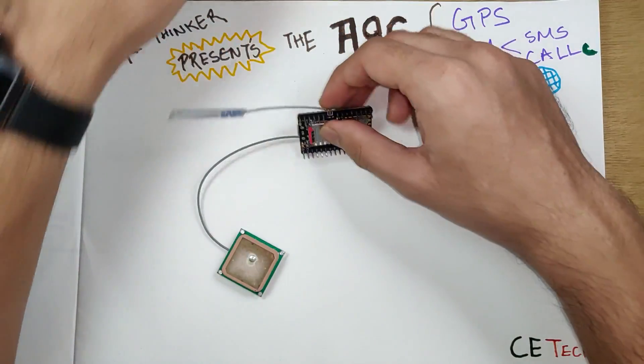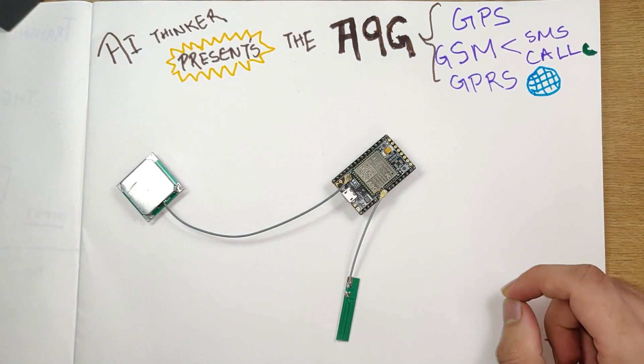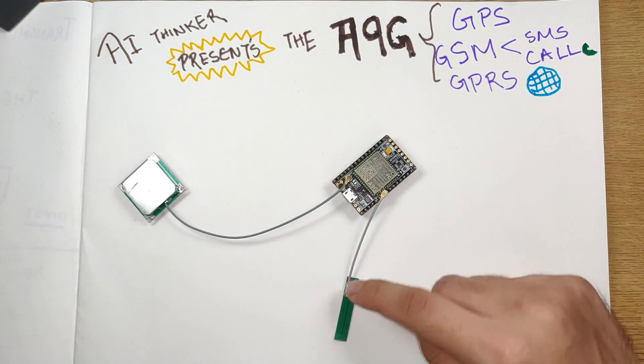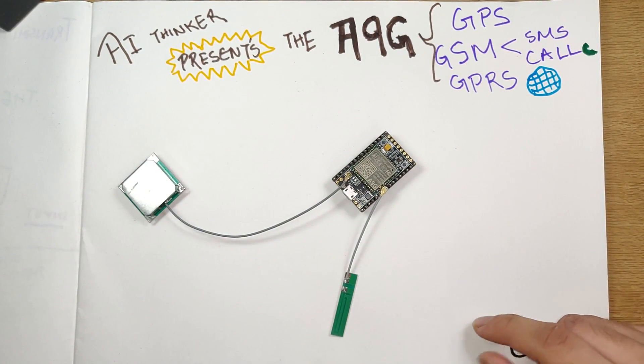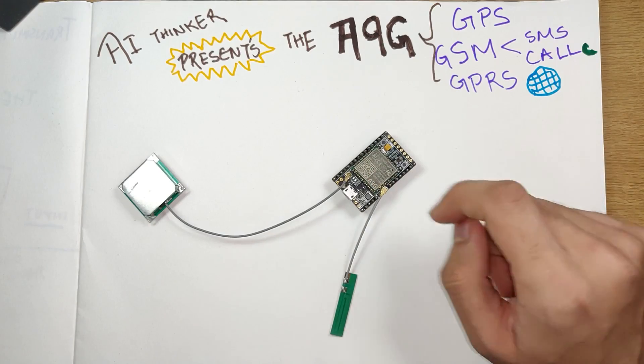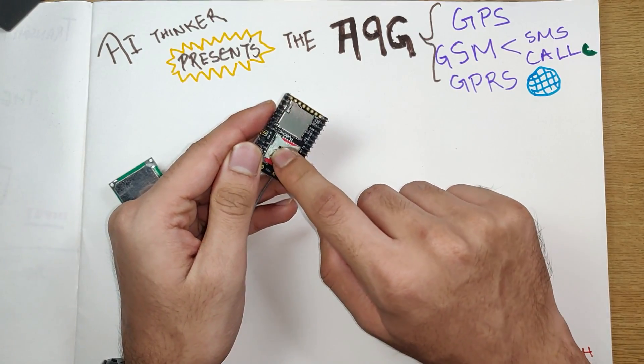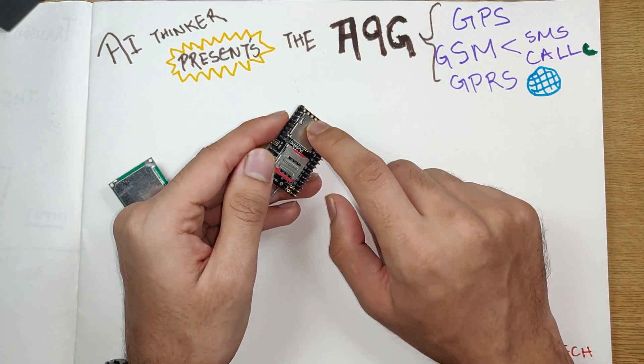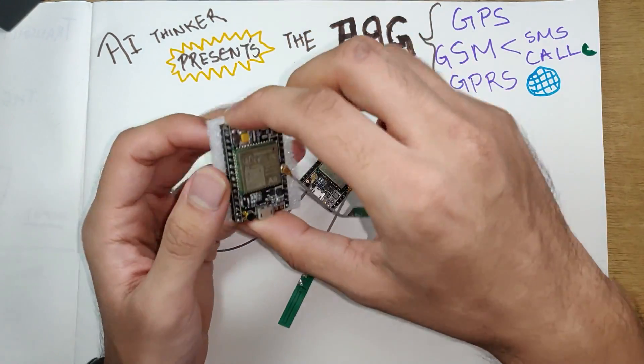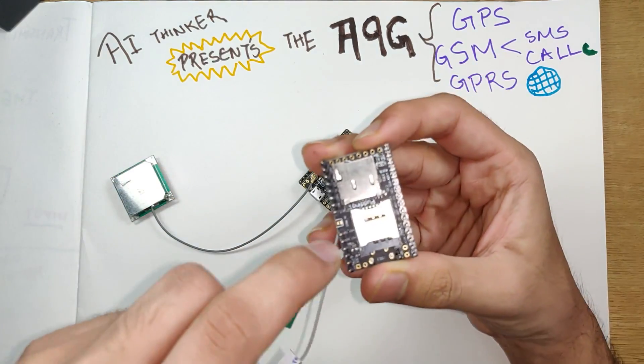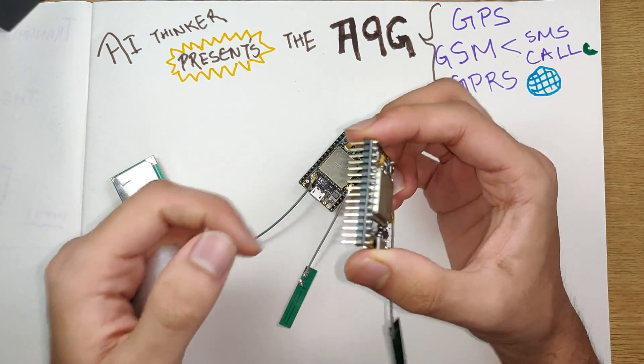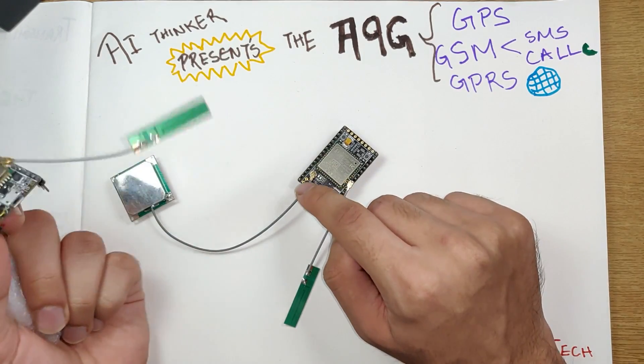We can get rid of all this mess. This is the A9G. It has a GPS antenna, it has a GSM or GPRS antenna built in. It's a very powerful module that's available. On the back it has a SIM card slot and a micro SD card slot.